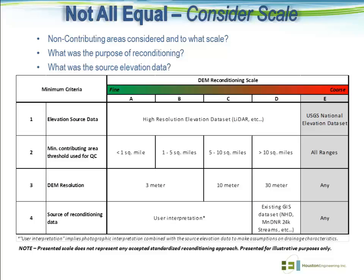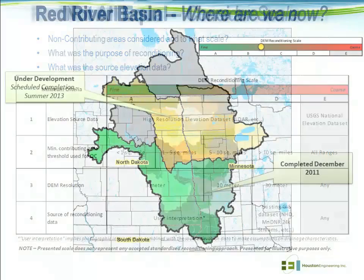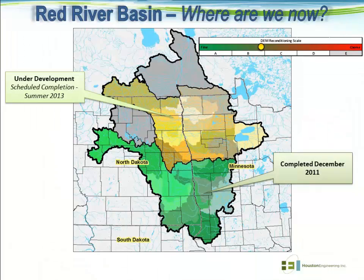Depending on the use of that dataset, it may or may not meet the criteria you've set forth for your end purpose. What you see here is a graphic we've put together at Houston — by no means a standard way of ranking reconditioning, but just one way of looking at it. You have a fine scale where you may have reconditioned down to a very small threshold for user QA/QC during the reconditioning process, all the way up to a really coarse scale which would correlate more to large-scale sub-basin delineation, such as delineating HUC-10s or HUC-8s. It's something you really need to be concerned about when picking up an already-reconditioned dataset and making sure it's consistent with, or at least to the same level as, what you require to meet your end goal.